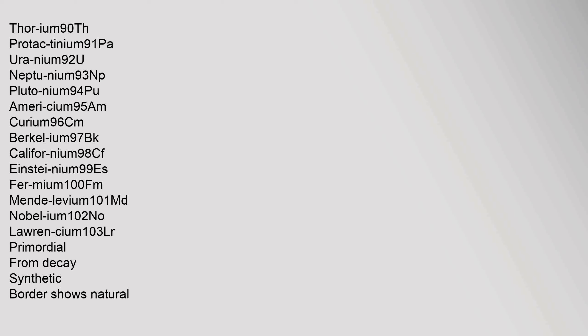Actinides: Actinium 89 Ac, Thorium 90 Th, Protactinium 91 Pa, Uranium 92 U, Neptunium 93 Np, Plutonium 94 Pu, Americium 95 Am, Curium 96 Cm, Berkelium 97 Bk, Californium 98 Cf, Einsteinium 99 Es, Fermium 100 Fm, Mendelevium 101 Md, Nobelium 102 No, Lawrencium 103 Lr.